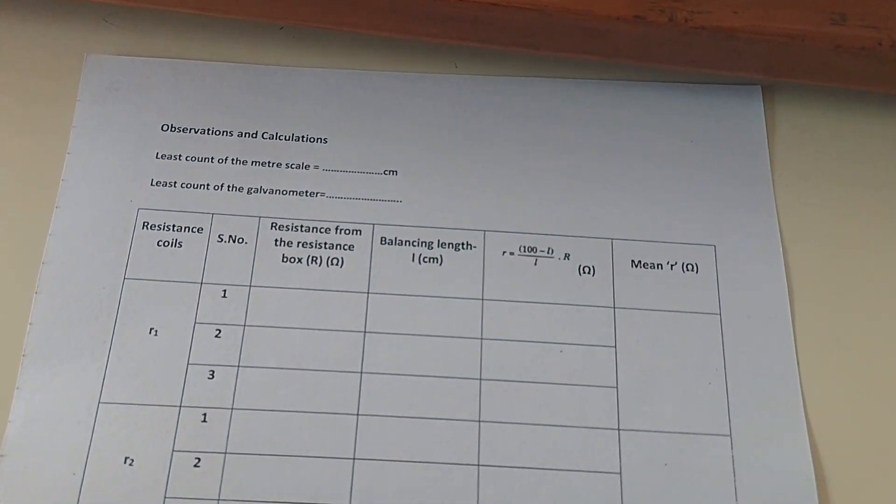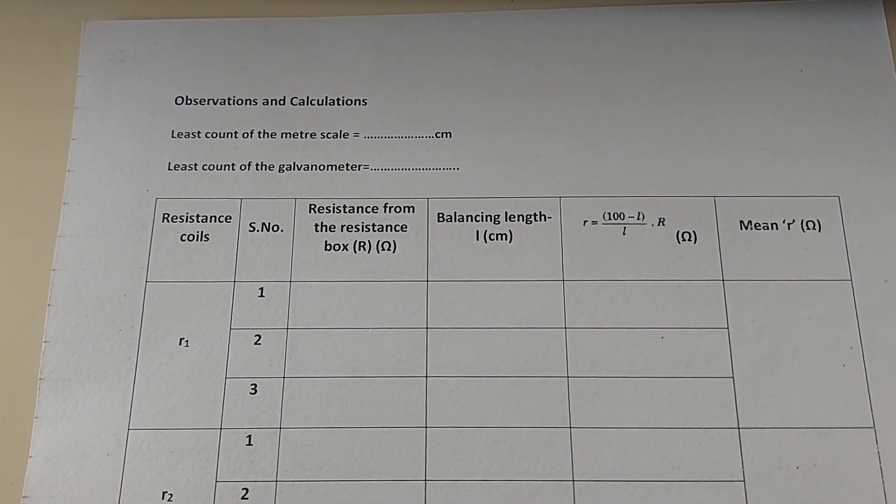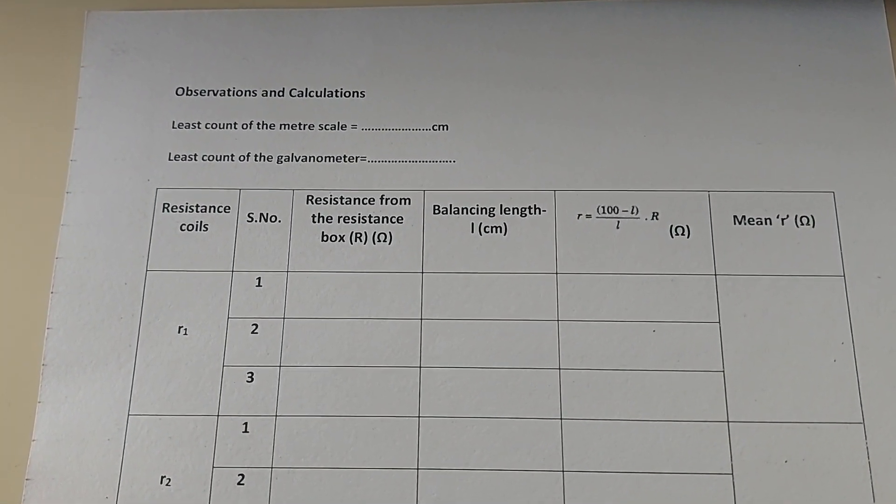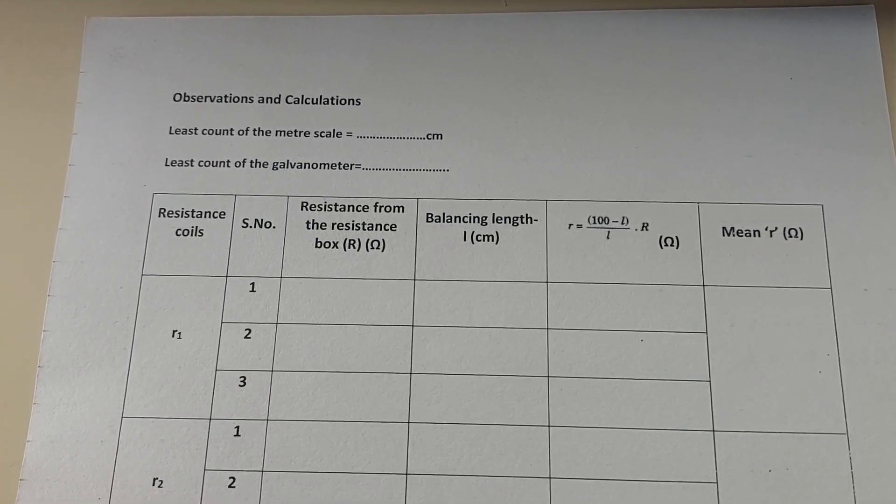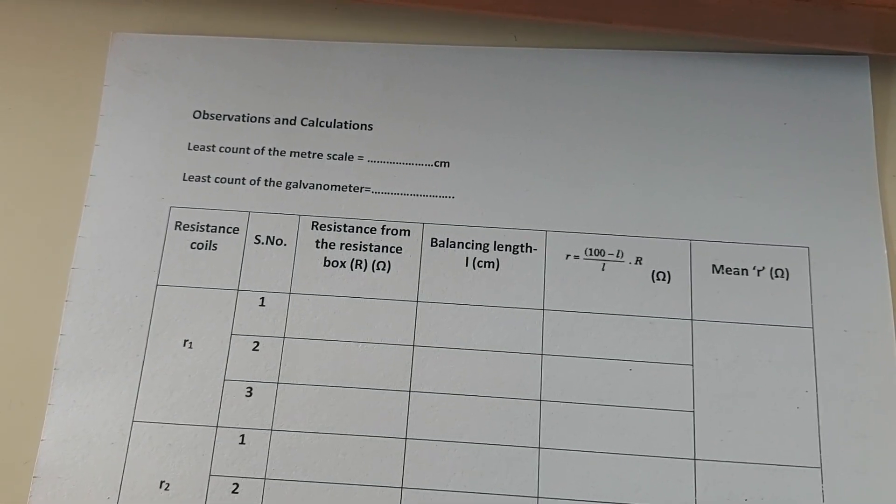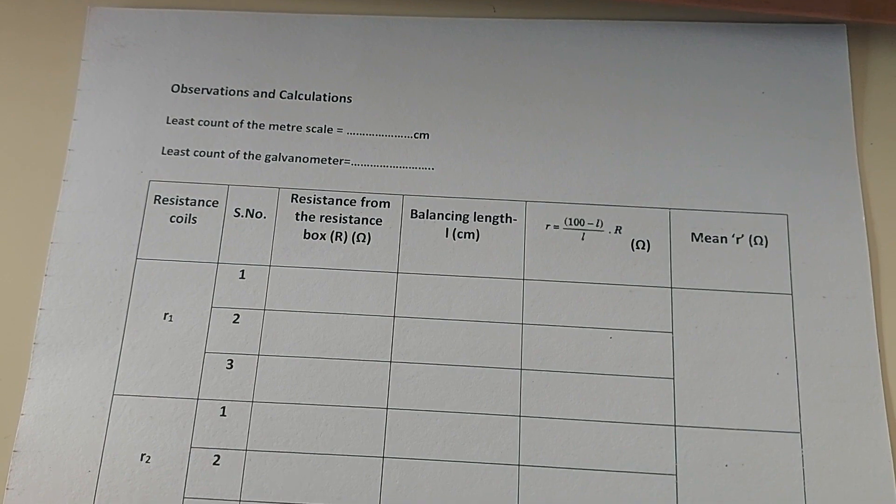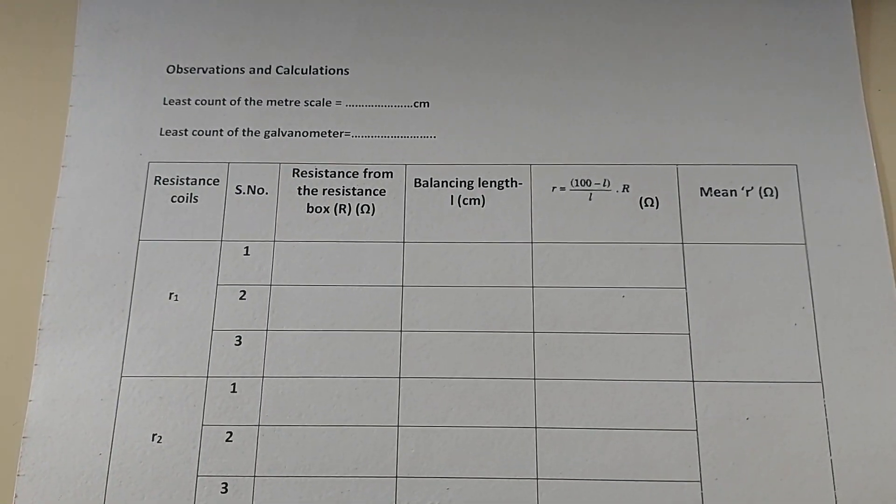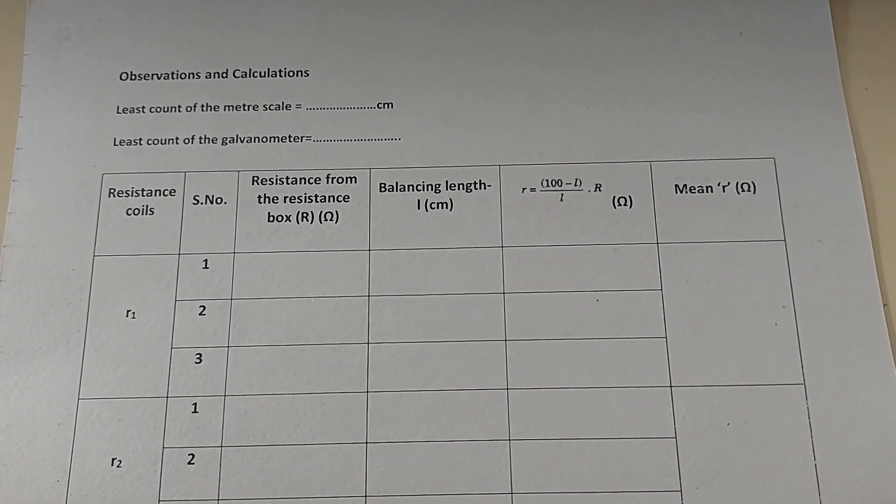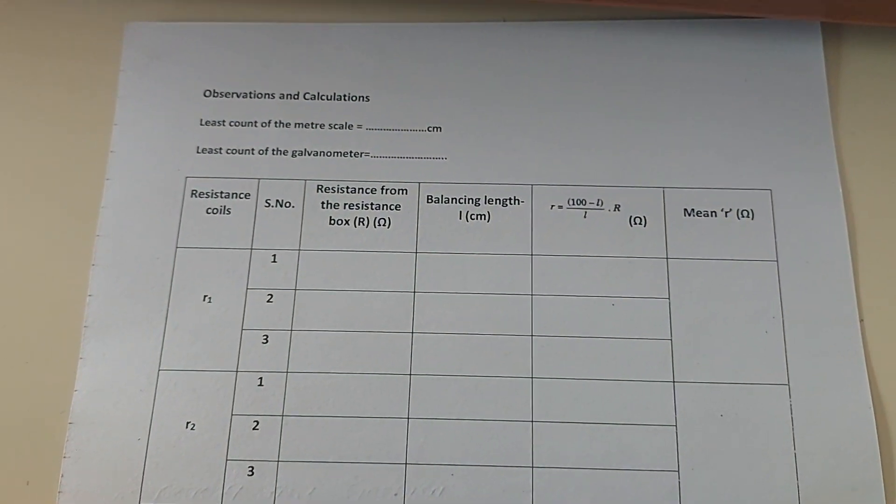Now before you start the observation, I forgot to mention in my previous one, you have to write down the least count of the meter scale and least count of the galvanometer. Please do not miss out on all these values. These are very important when we prepare an observation table.